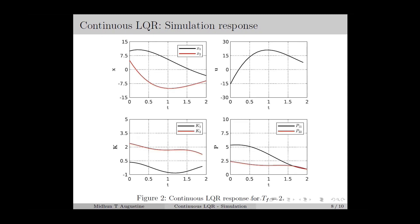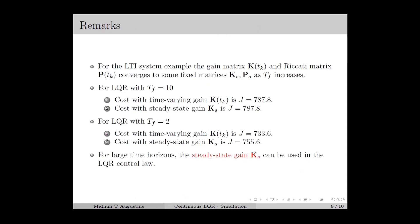The MATLAB code for the simulations in this lecture can be downloaded from the link given in the description. From the simulation response we can observe that if the time horizon is sufficiently large, the feedback gain and cost matrices for a controllable LTI system converge to some fixed values, denoted ks and ps.